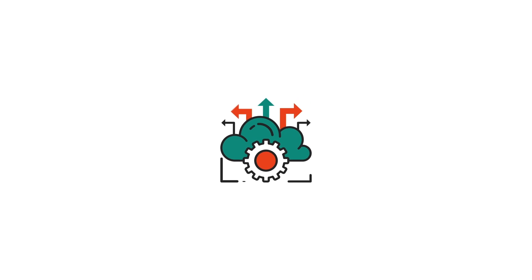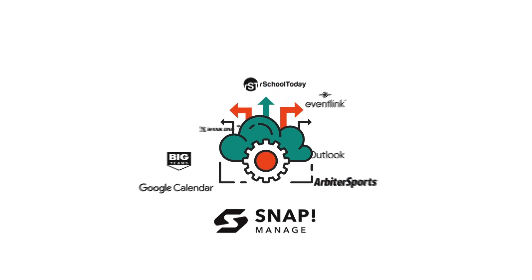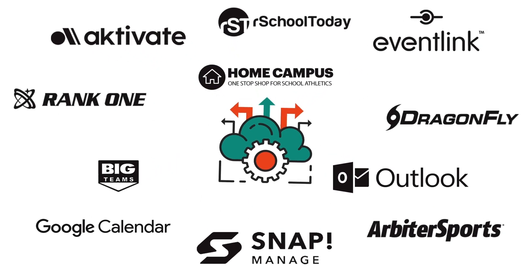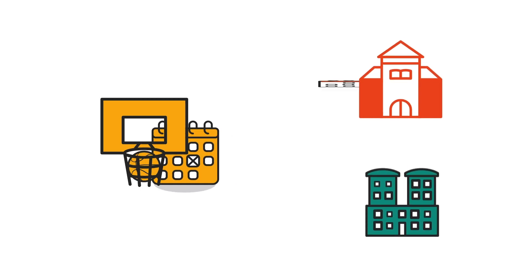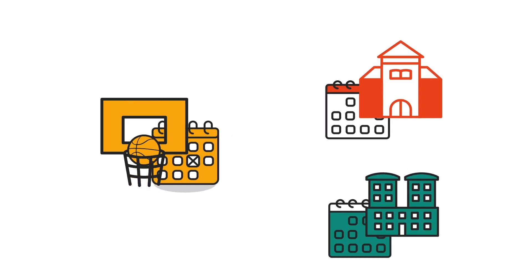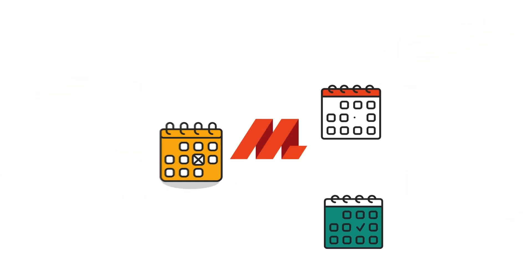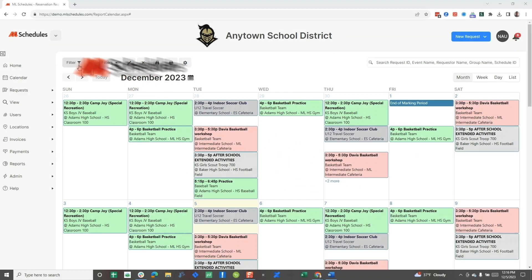We also made sure our system is integrated with some of the most popular calendar and productivity tools out there. Does your athletic department use a separate scheduling system for their games and practices? Does each building manage their own Google or Outlook calendar? ML Schedules automatically pulls all of the necessary information together into one unified system so everyone is on the same page.